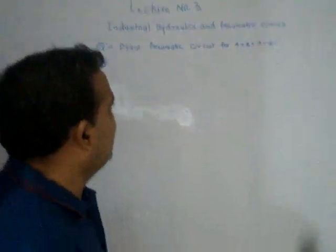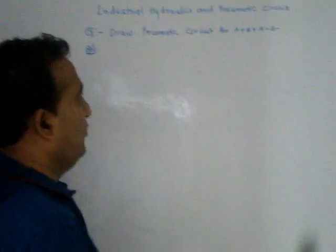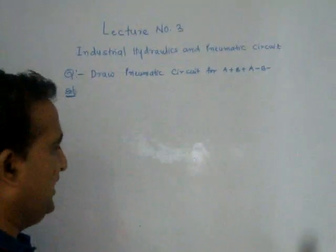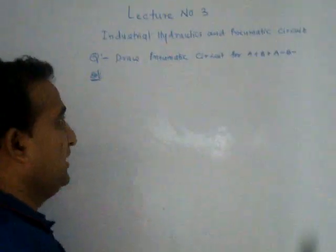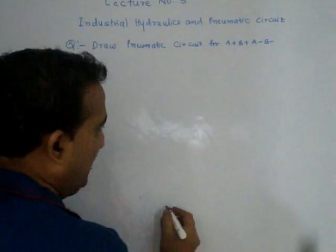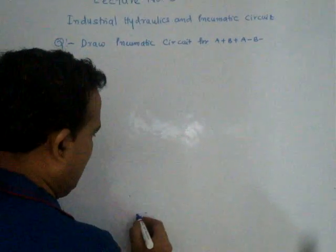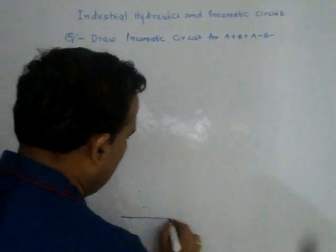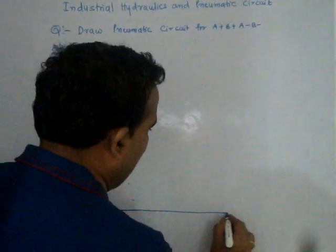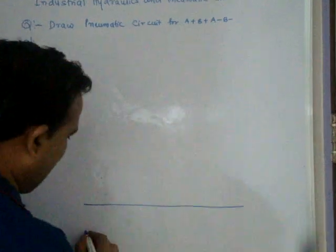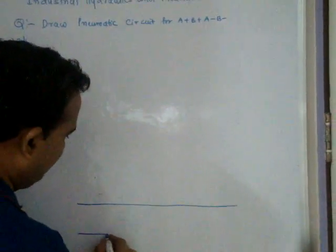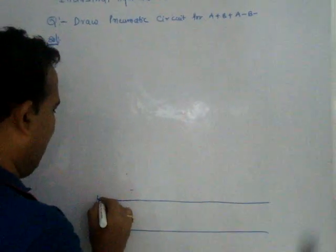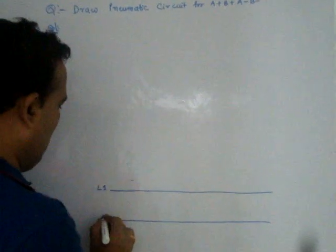Whenever there are two cylinders, you draw two lines first. This is the first line, this is the second line. Say L1 line and L2 line.